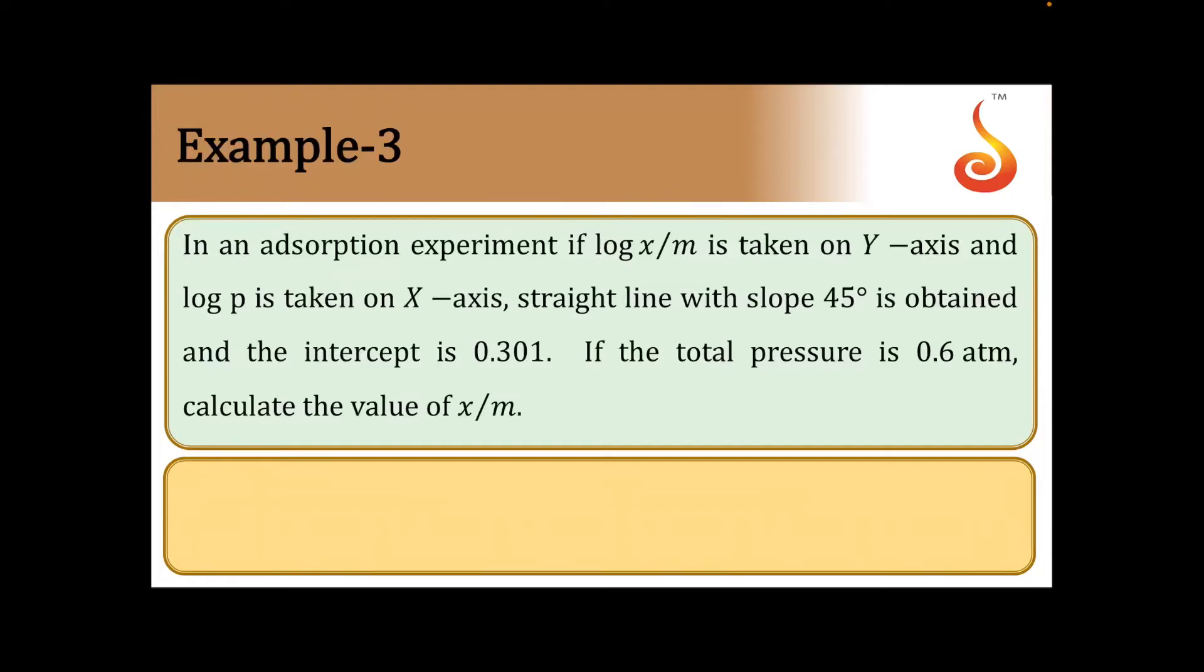In an adsorption experiment, if log x by m is taken on y-axis and log p is taken on x-axis, straight line with the slope 45 degrees is obtained. The intercept is 0.301. If the total pressure is 0.6 atm, calculate the value of x by m.